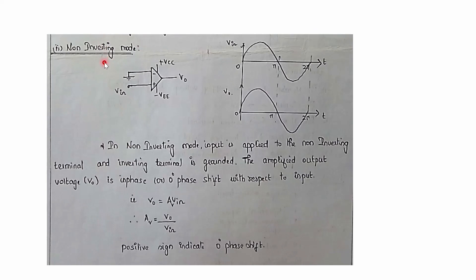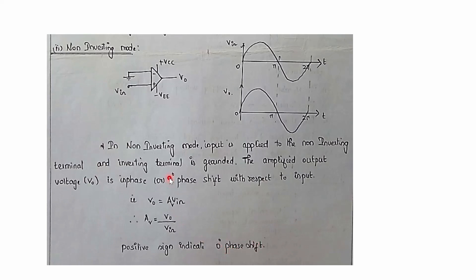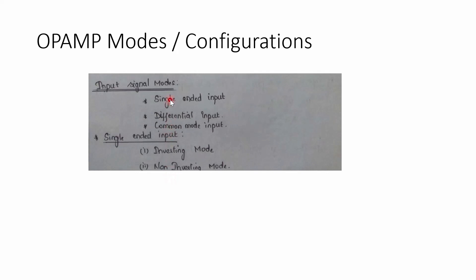Next is non-inverting mode. This is also a single-ended input where the input is applied to the non-inverting terminal and the inverting terminal is grounded. Since we are applying input to the non-inverting terminal, output will have a 0-degree phase shift — there is amplification but no phase shift between input and output. Output voltage can be written as plus AV times Vin. AV is the voltage gain and AV equals VO divided by Vin. The positive sign represents 0-degree phase shift. Inverting and non-inverting modes both come under single-ended input.